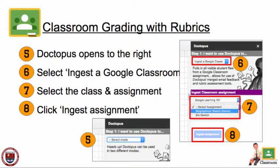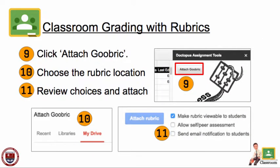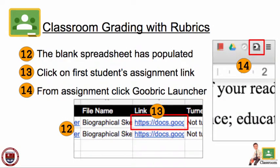In Step 1, you must choose to ingest a Google Classroom. Further options will show up allowing you to choose the class and assignment, then click on Ingest Assignment. You must then attach a Goobric by clicking the button and choosing the location where your rubric is located. Review the choices and attach the rubric. You will now notice that the blank spreadsheet has populated with your students' assignments.